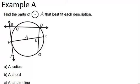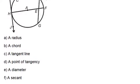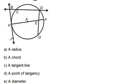In example A, it says, find the parts of circle A that best fit each description. And we have a bunch of different words to look for, all the way up to F.